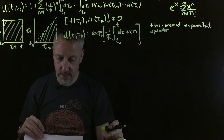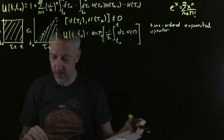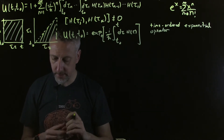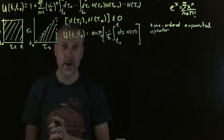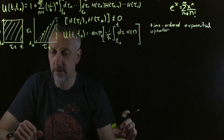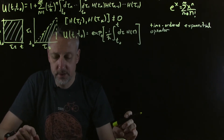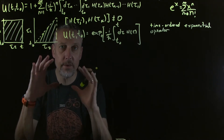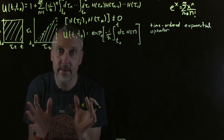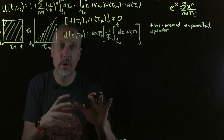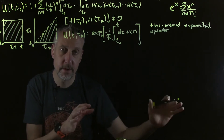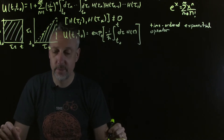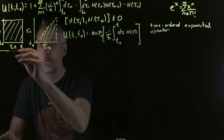What we're going to do now is work out the steps needed to break up the time evolution into a part we can keep completely intact and a part that we treat with a series that we truncate. That will be the basis for time-dependent perturbation theory. Let's start that now.